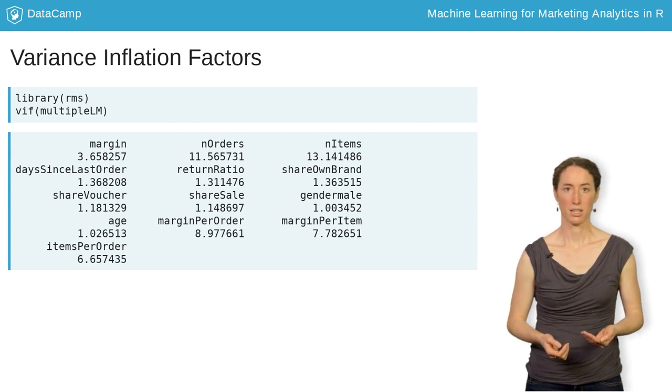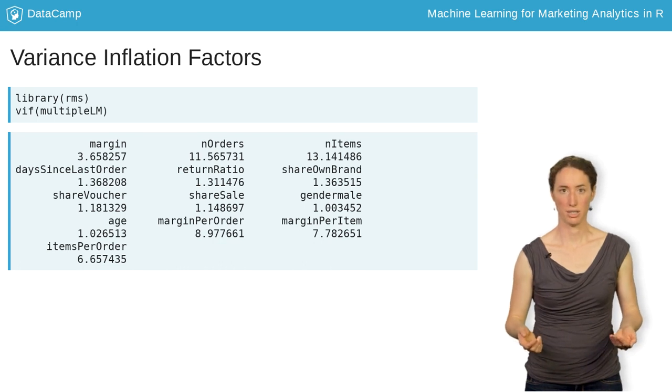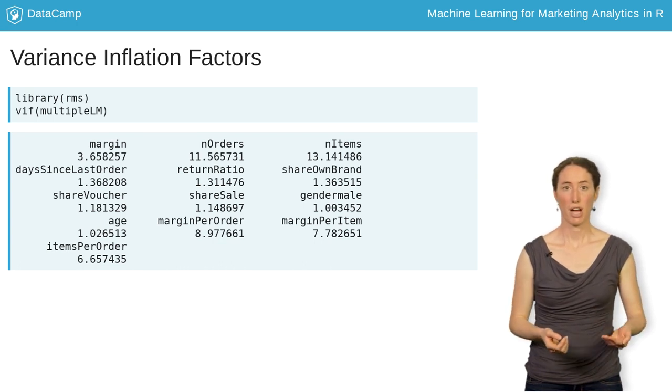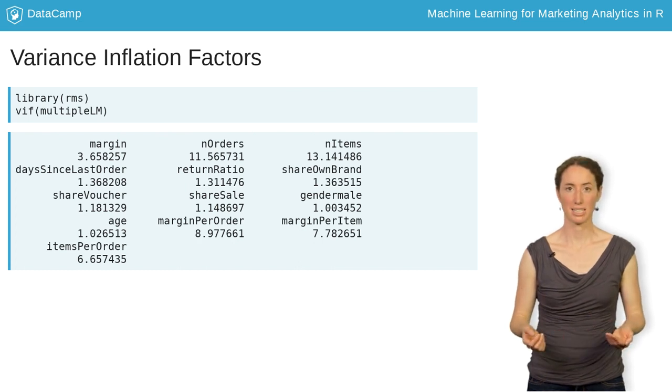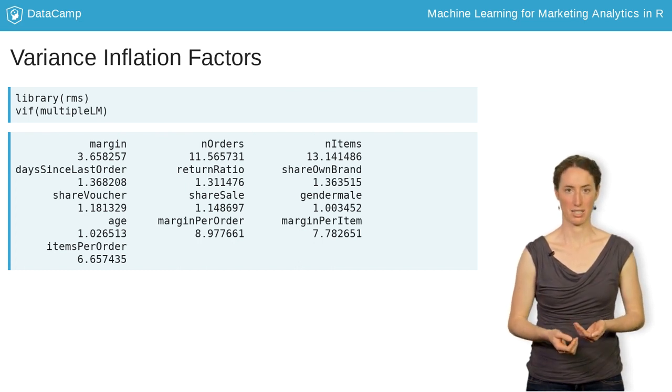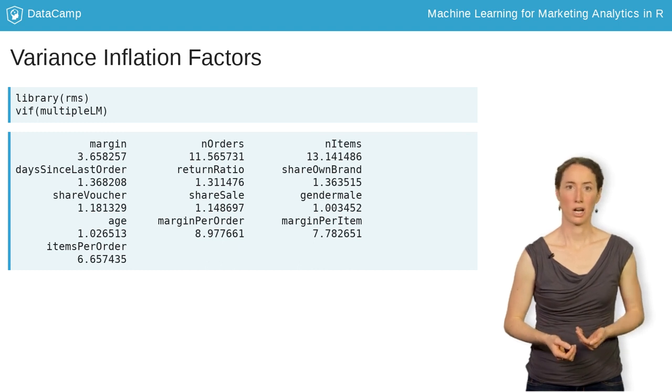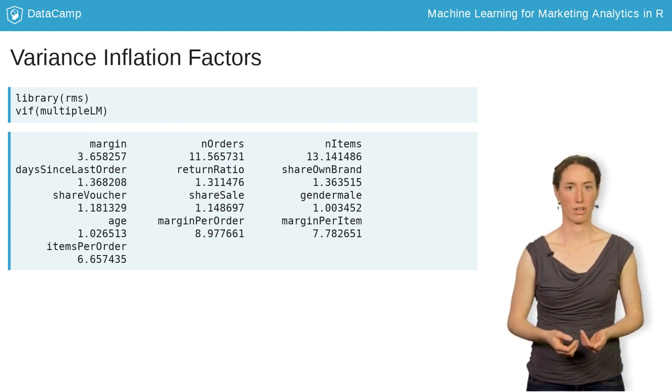These indicate the increase in the variance of an estimated coefficient due to multicollinearity. A VIF higher than 5 is problematic, and values above 10 indicate poor regression estimates. Let's look at our model's variance inflation factors.